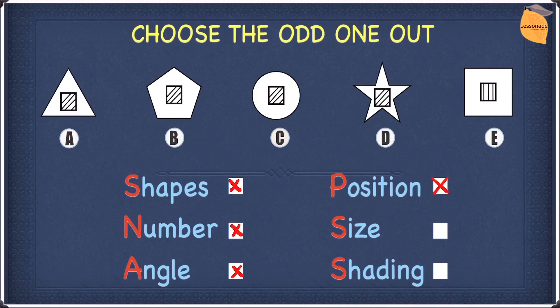So let's move on to size. So in terms of size, all of the shapes have different sizes because they're all different shapes. So a triangle might be a different size to a pentagon and might be a different size to a circle. We cannot use the size as a way of getting the odd one out either.